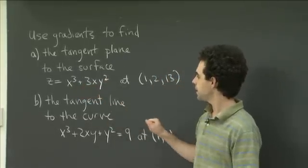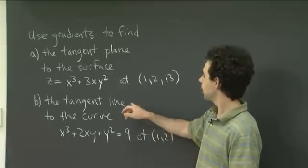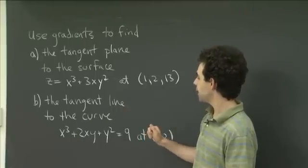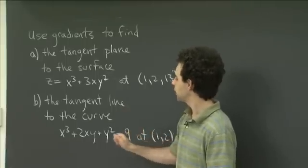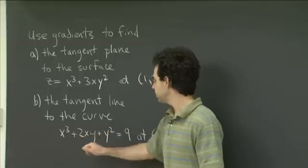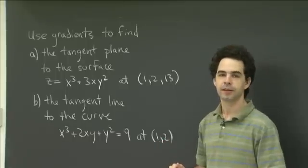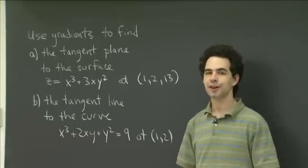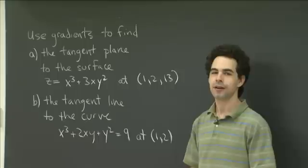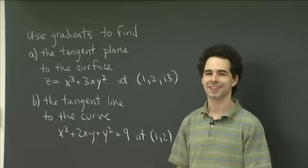And in part B, I'd like you to do something similar, which is to use gradients to find the tangent line to the curve x cubed plus 2xy plus y squared equals 9 at the point (1, 2). So why don't you pause the video, have a couple of goes at those, come back, and we can work on them together.